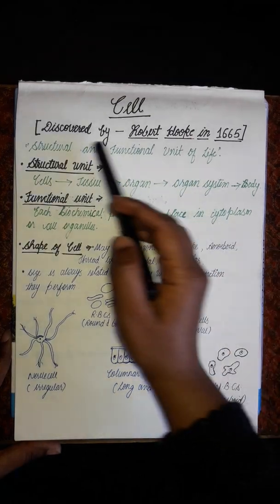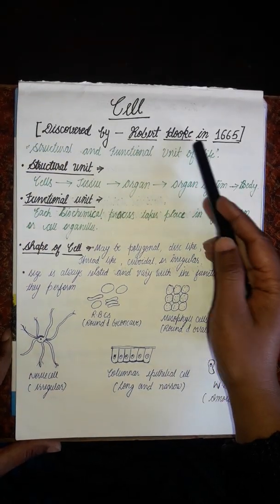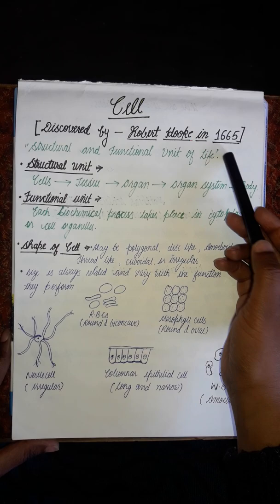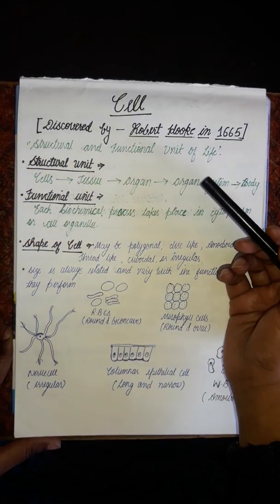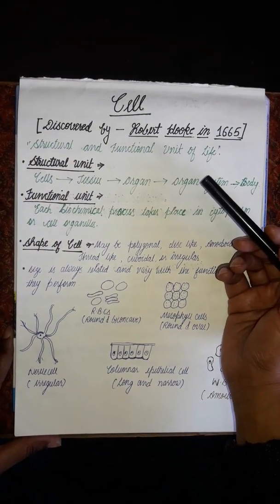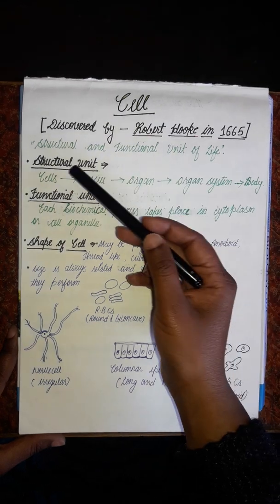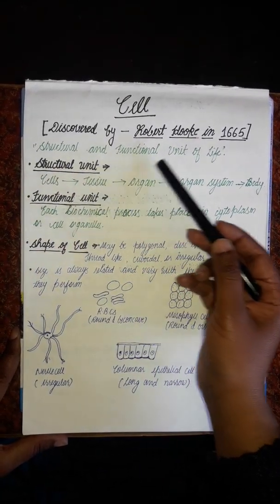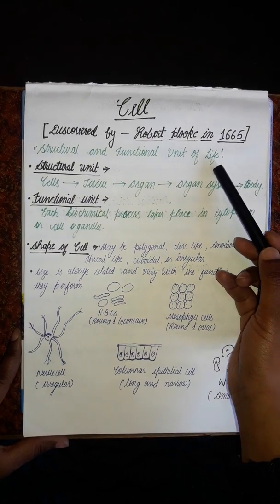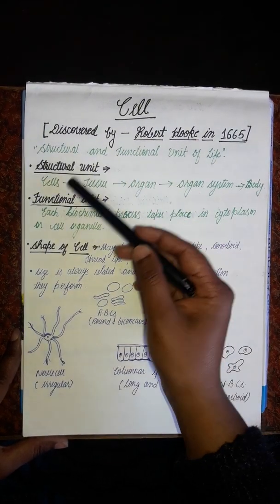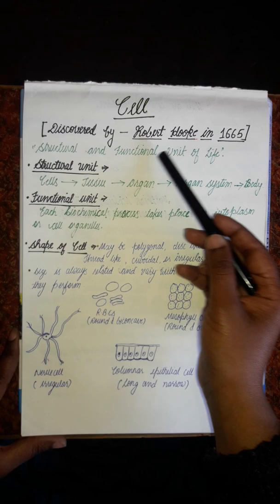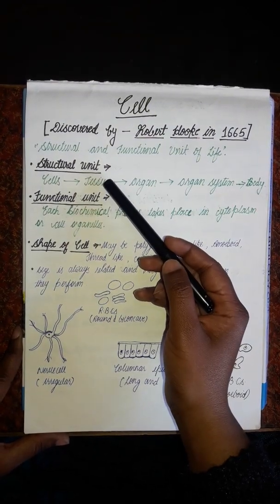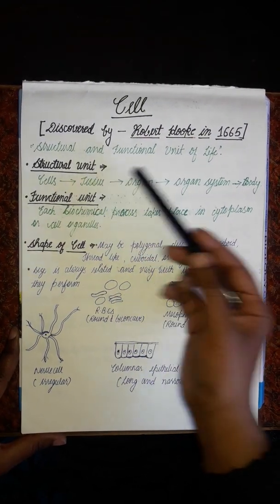The basic unit of life is the cell. The definition of the cell is: the structural and functional unit of life. Now we will discuss how the cell is the structural unit of life and how it is the functional unit of life.